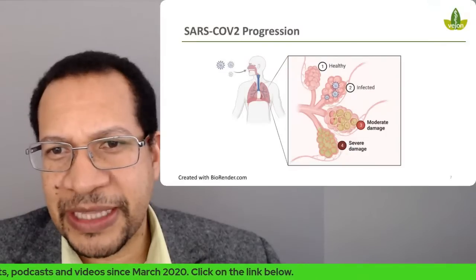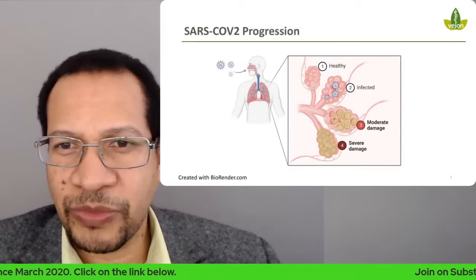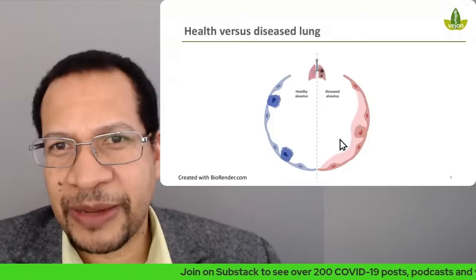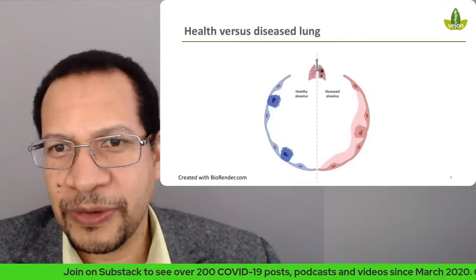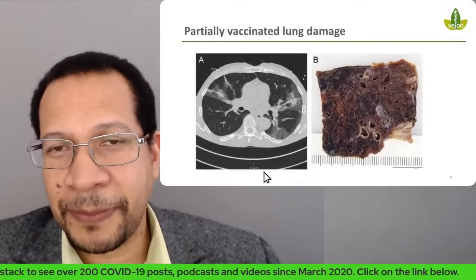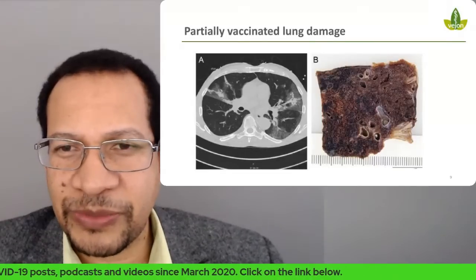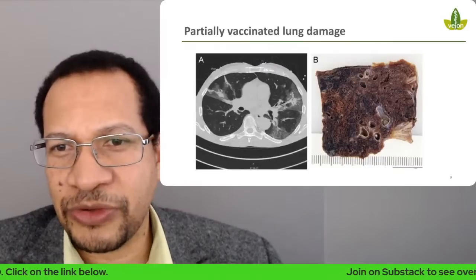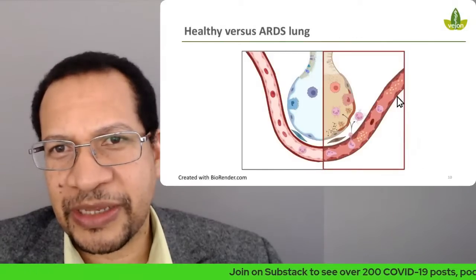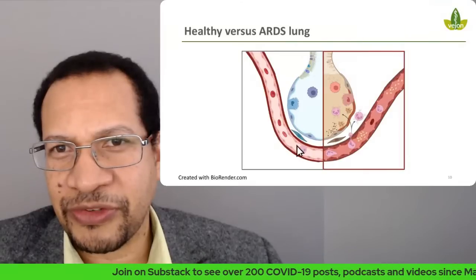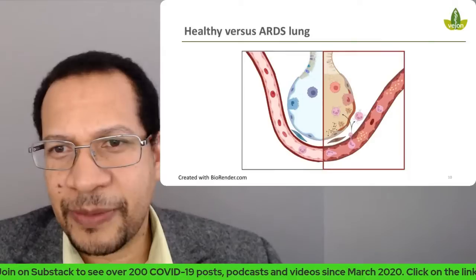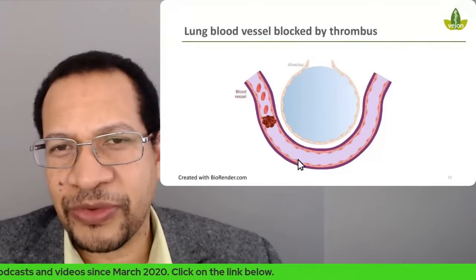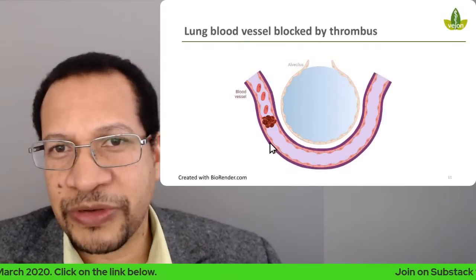These are just some of the slides going through COVID-19 to give a better understanding. This here is just showing what happens in inflammation — healthy versus diseased lung. This was a picture from the paper showing a diseased lung, and we talk about what is involved in the disease — the diffuse alveolar damage. This is another picture showing what would happen in severe disease as opposed to a normal healthy lung.